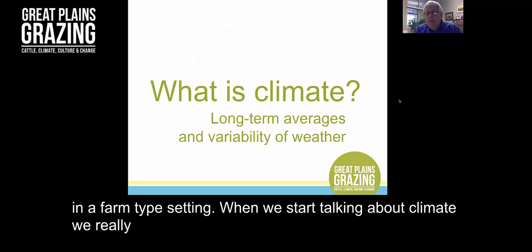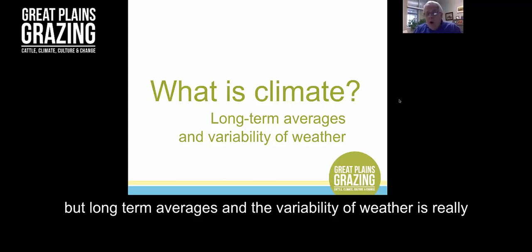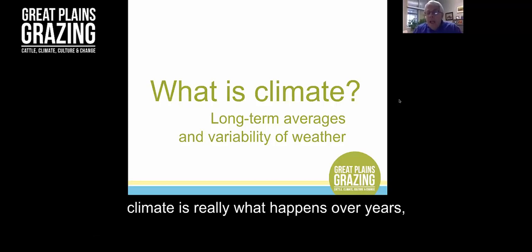When we start talking about climate, we really need to differentiate between climate and weather. Long-term averages and the variability of weather is really what makes up climate. Weather is what happens on a day-to-day basis. Climate is what happens over years, decades, centuries.